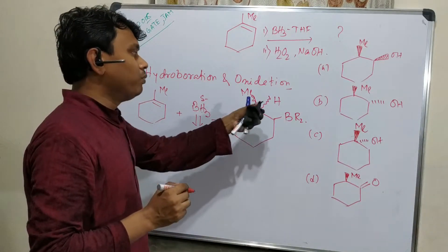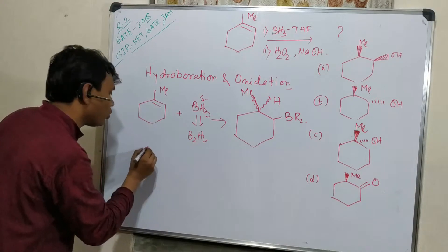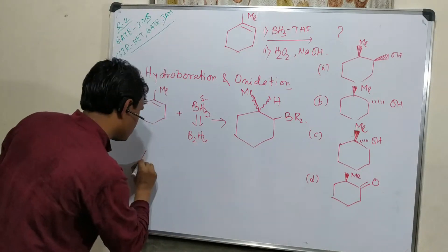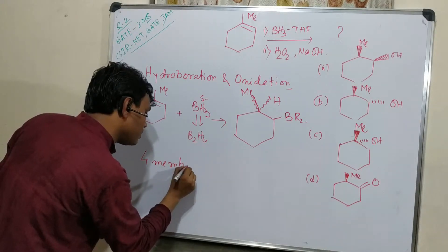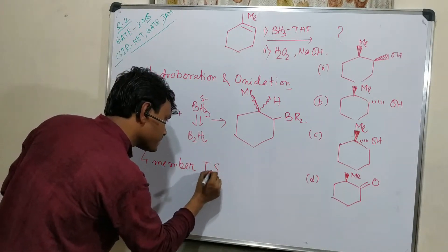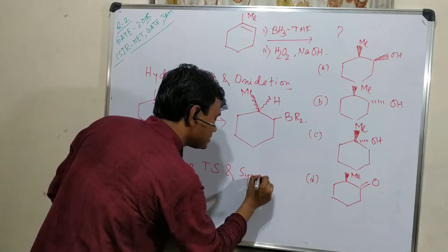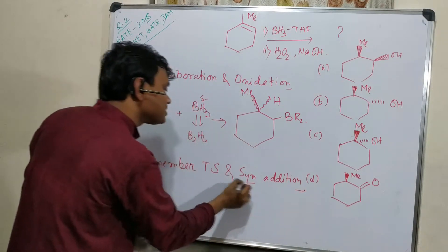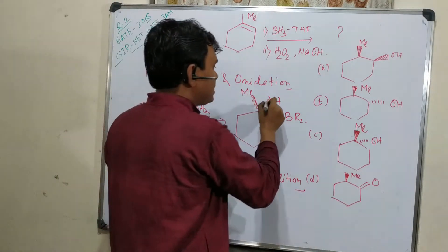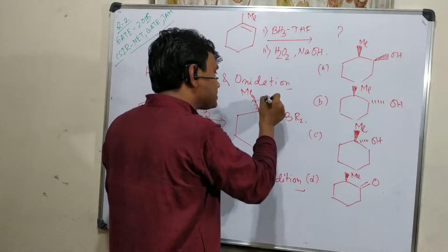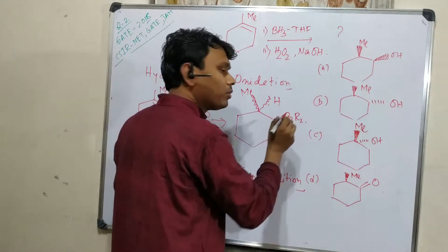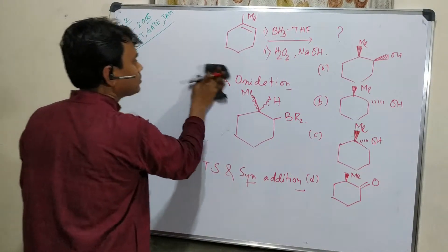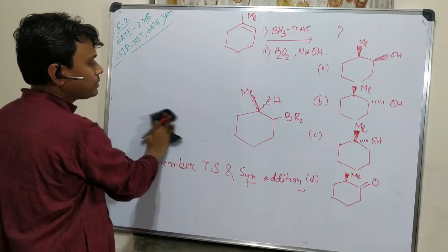Actually it's better to write BR2 because three hydrides will attach to three alkenes. The boron will be attached to three alkenes, that's why I'm writing BR. We'll focus on only one, then we'll understand the rest. The important message is boron-hydrogen addition happens through a four-membered transition state and this is a syn addition, meaning same side addition.